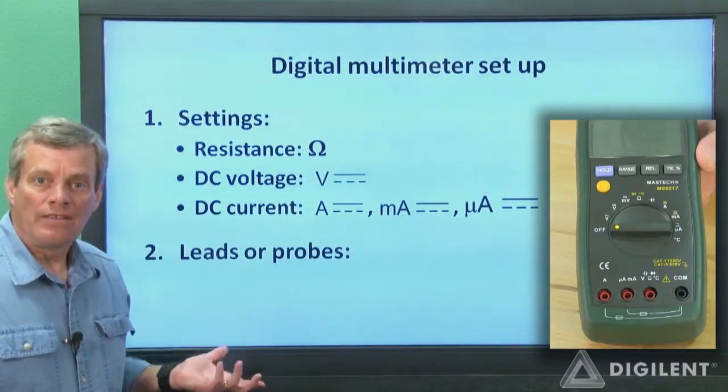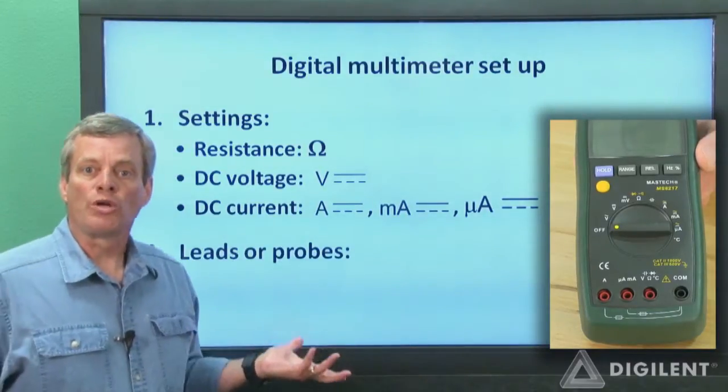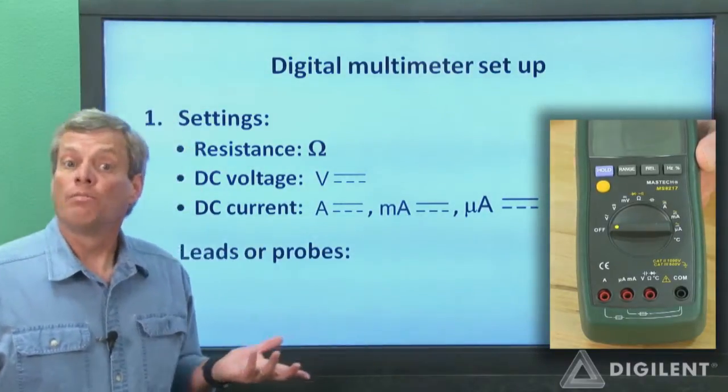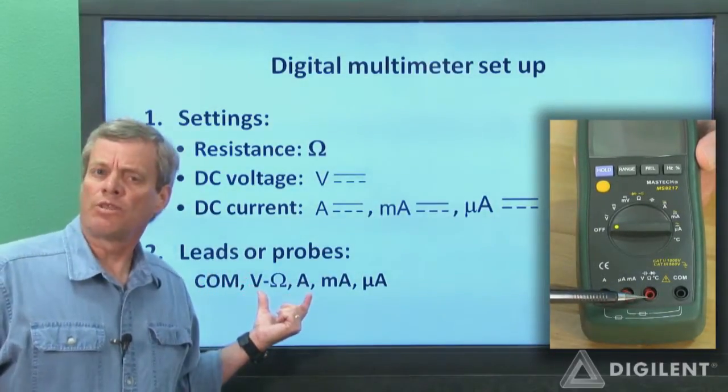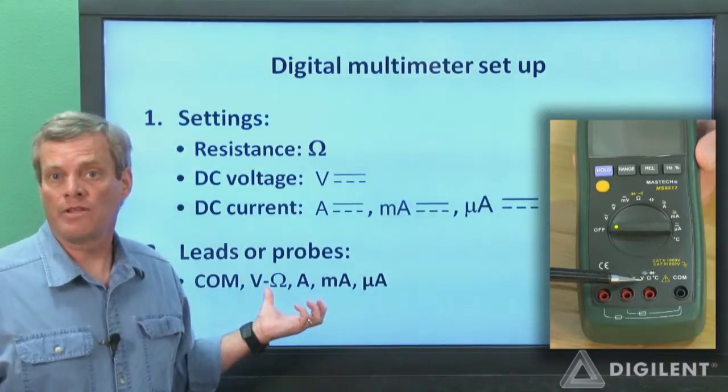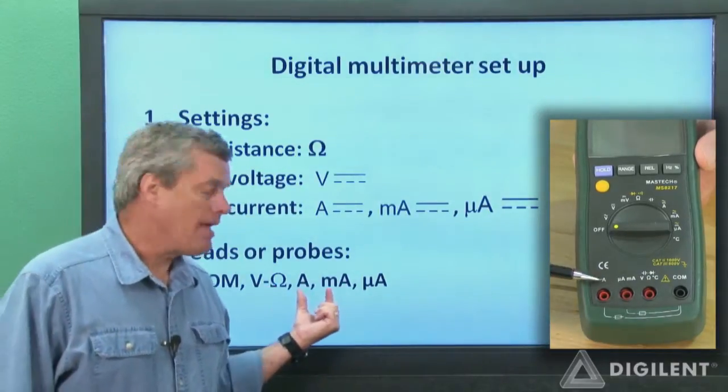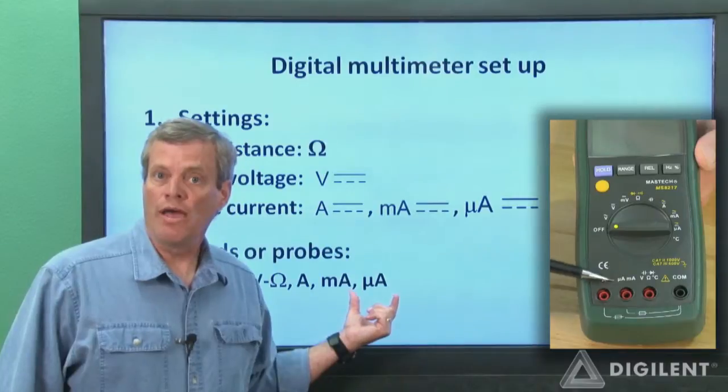We also need to plug the DMM probes into the correct port on the front of the DMM. The ports are typically labeled as COM, V, usually with an ohm symbol next to it, and sometimes with other symbols as well, and A, or mA and sometimes μA.